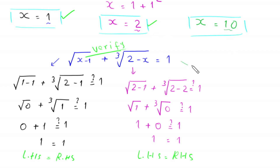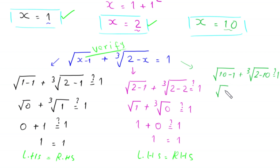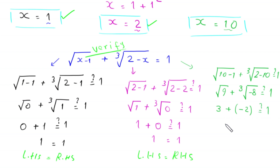When x equals 10, this equation becomes square root of 10 minus 1 plus cube root of 2 minus 10, which is square root of 9 plus cube root of negative 8. That gives 3 plus negative 2, which is 3 minus 2 equals 1. The left hand side equals the right hand side, so x equals 10 is also a valid solution.